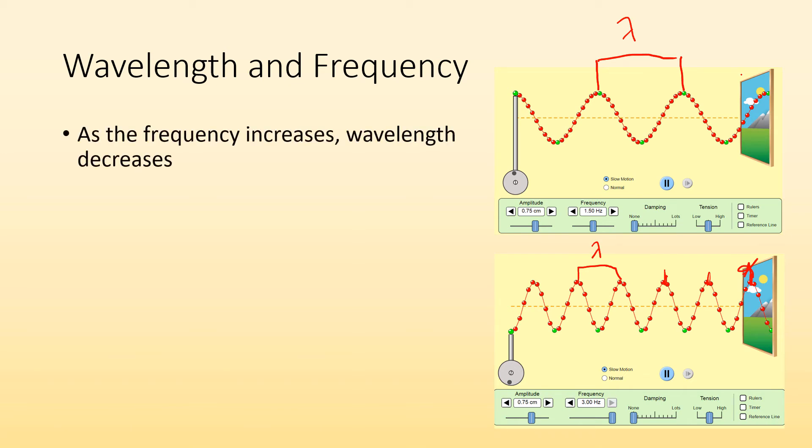So as the frequency increases, the wavelength decreases. If all those peaks are traveling at the same speed, the only way you can have more peaks passing the same point during a given second is if the distance between those peaks is smaller. The speed that they travel is still the same. So the speed of light is always constant.